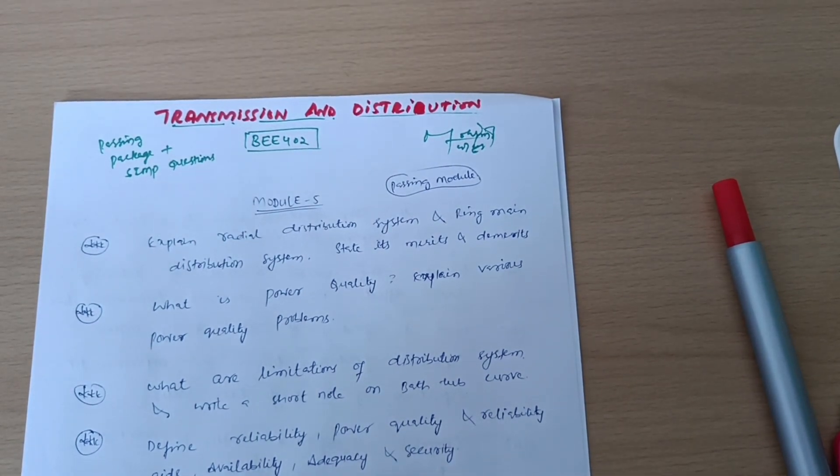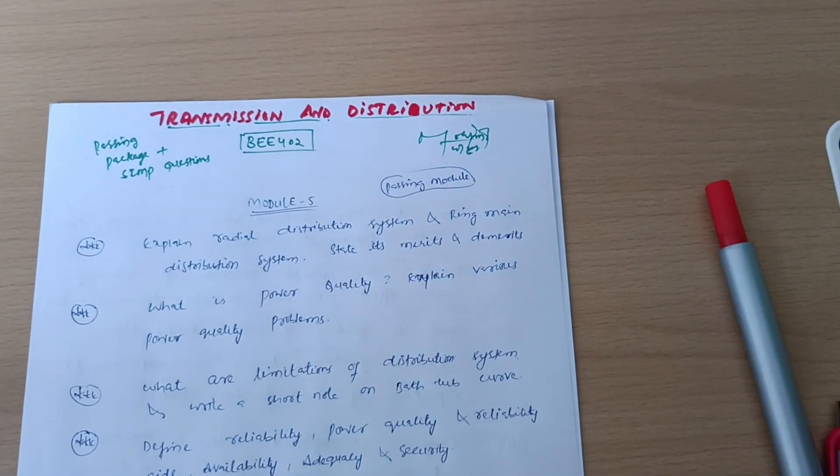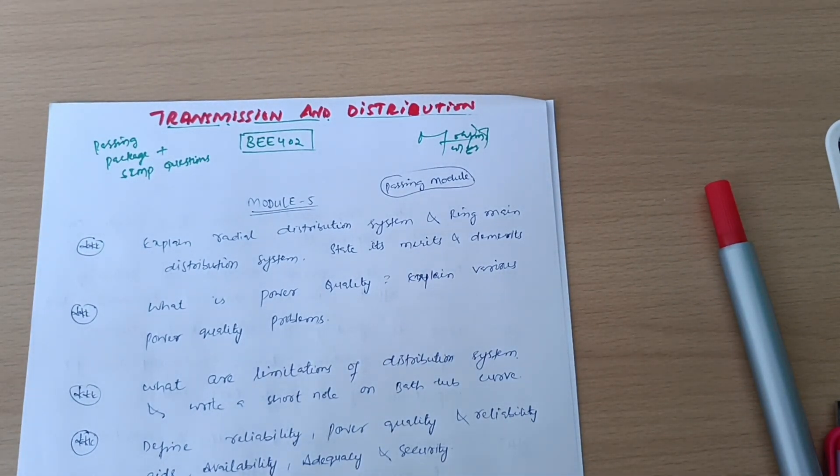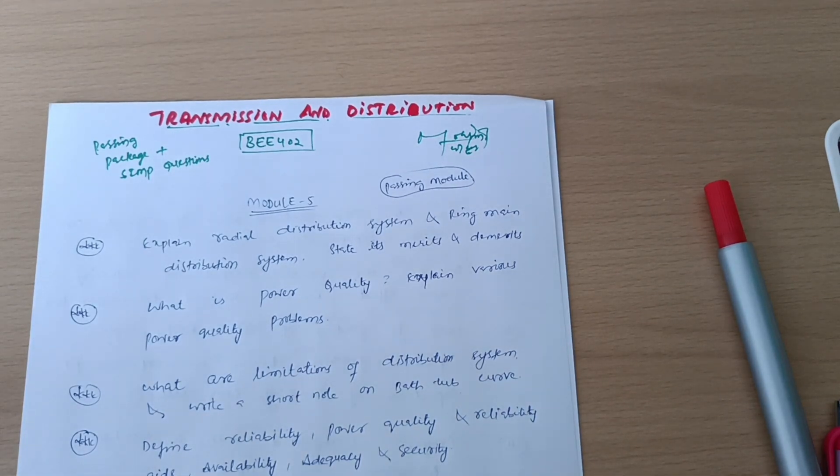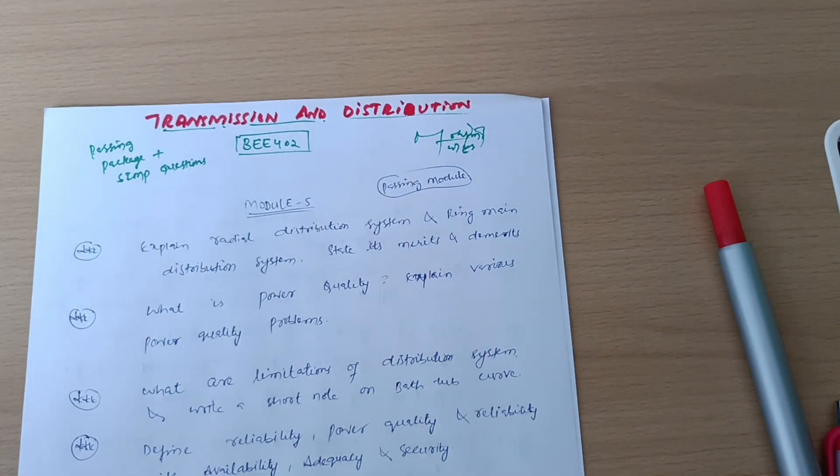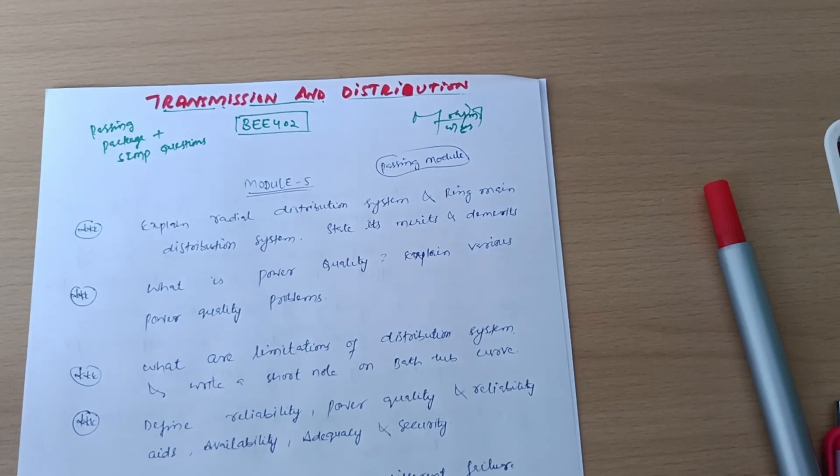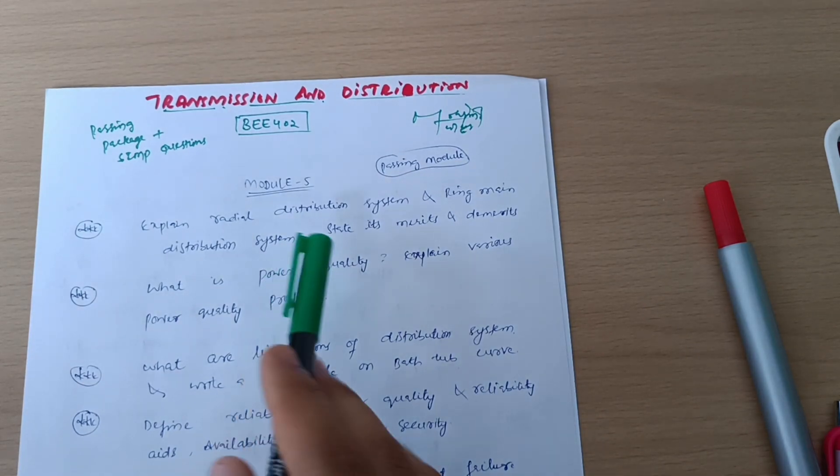Today I'm with your second core subject, Transmission and Distribution BEE402. We will be discussing some passing modules and super important questions. I was able to analyze all the previous year question papers of 18 scheme and 21 scheme. Let us start with the first passing model, that is Module 5.